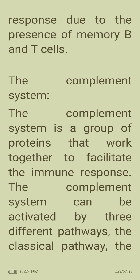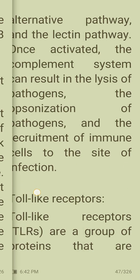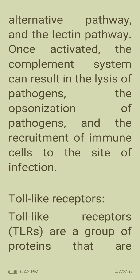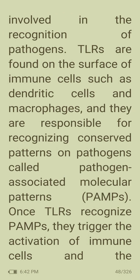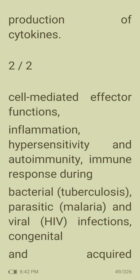The complement system is a group of proteins that facilitate the immune response. It can be activated by three pathways: the classical pathway, the alternative pathway, and the lectin pathway. Once activated, it can lyse pathogens and opsonize them for phagocytosis, and recruit immune cells to the infection site. Toll-like receptors (TLRs) are proteins found on immune cells such as dendritic cells and macrophages that recognize conserved pathogen-associated molecular patterns (PAMPs). When TLRs recognize PAMPs, they trigger activation of immune cells and cytokine production.